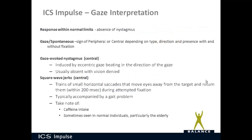Regarding interpretation: a response within normal limits is the absence of nystagmus. Gaze and spontaneous tests help you decide whether the person has a peripheral or central disorder depending on the type, direction, and presence with or without fixation. Gaze-evoked nystagmus is usually central in origin — induced by eccentric gaze, beating in the direction of the gaze: ask the patient to look left and you get left-beating nystagmus, look right and you get right-beating nystagmus. It's usually absent with vision denied. Square wave jerks are also central in origin — trains of small horizontal saccades that move the eyes away from the target and return them within 200 milliseconds during attempted fixation, usually accompanied by a gait problem.